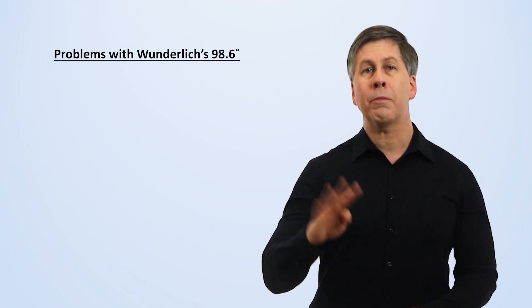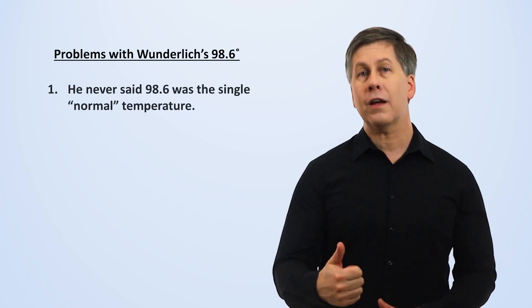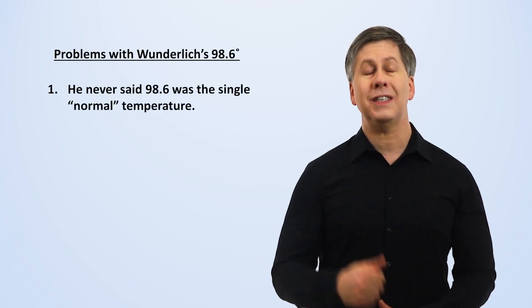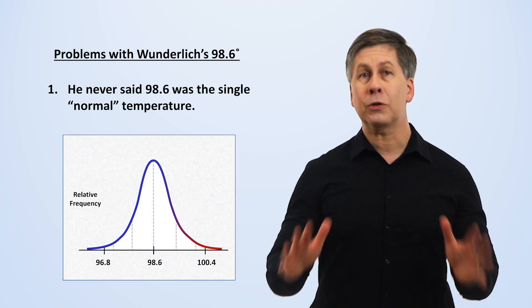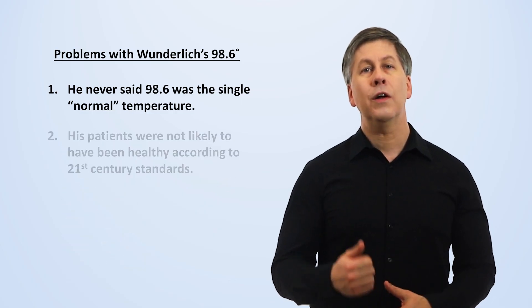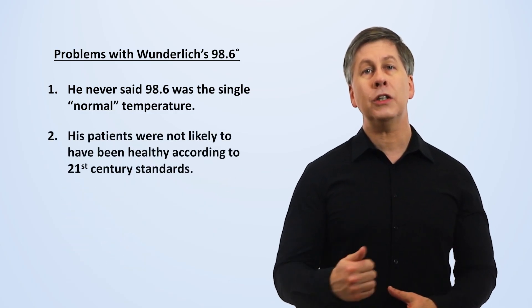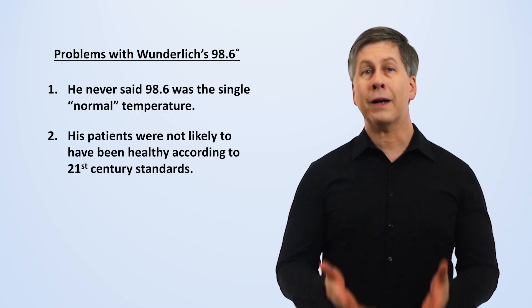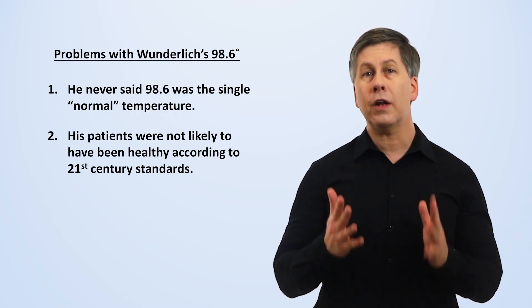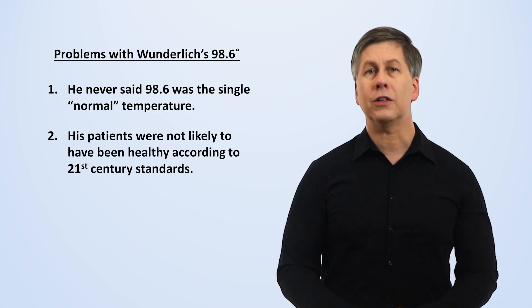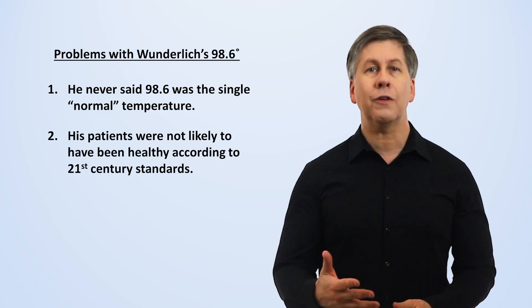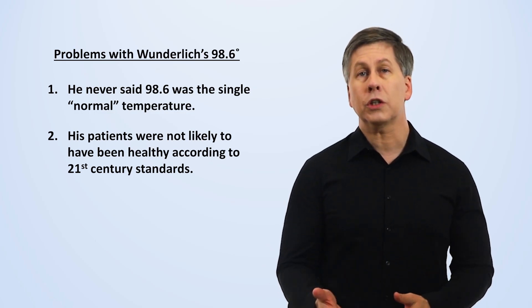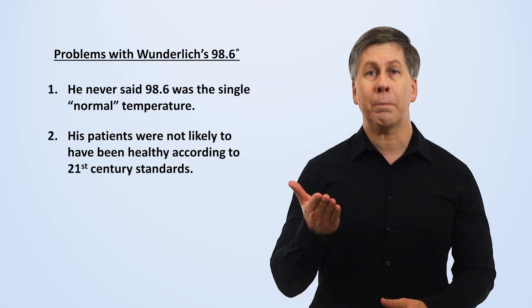Right off the bat, we can identify four big problems with this myth. First, Wunderlich never said that 98.6 was the single normal temperature, just that it was the mean or average around which people's temperatures were normally distributed. Second, these were measurements taken in his patients who were in variable health. Life expectancy in Europe during the time when Wunderlich was recording these temperatures was about 40 years. How many of his study subjects were walking around with occult cancers, periodontal infections, or indolent tuberculosis — all diseases which increase body temperature?